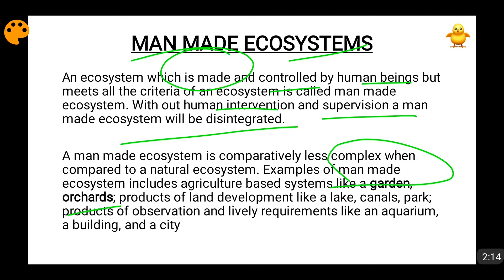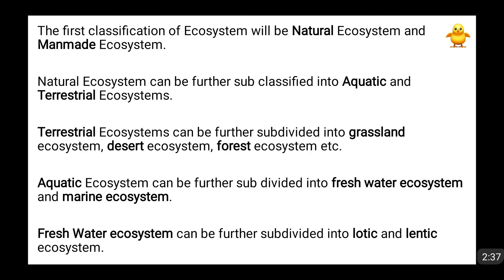Even a small aquarium kept inside your home is a manmade ecosystem — even if four or five fishes are in it, water is there, and you regularly pour in food for those fishes. Canals and parks are also manmade ecosystems. As they are made by man, their maintenance must be ensured and conserved by man.